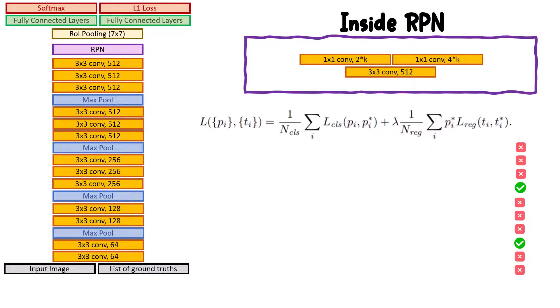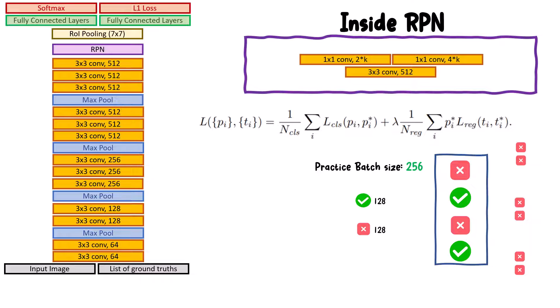To solve this problem, the authors propose to sample a subset of them in a way that the distribution is balanced. The batch size of our sampling is usually 256, which means we need 128 positive predictions and 128 negative ones. Remember, 128 doesn't necessarily mean we have 128 objects inside an image, because we might have multiple anchors with IoU more than 0.7 with an object.